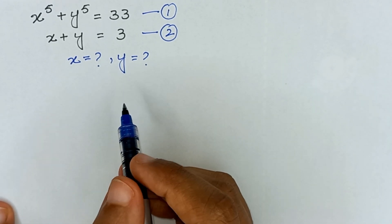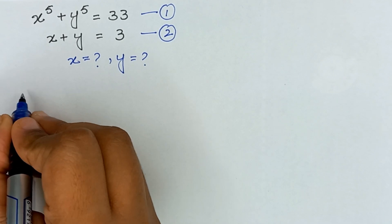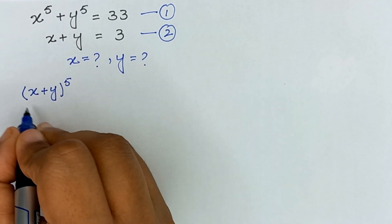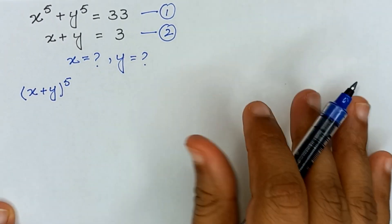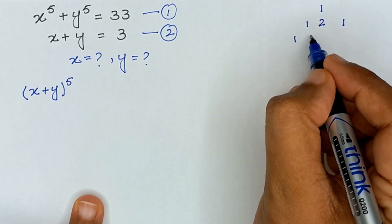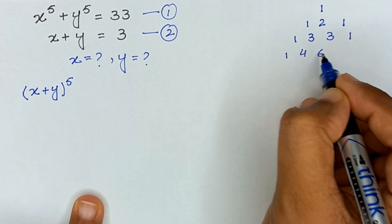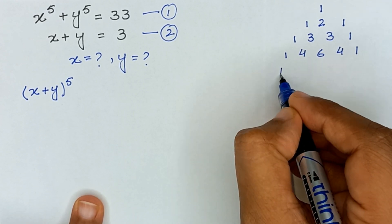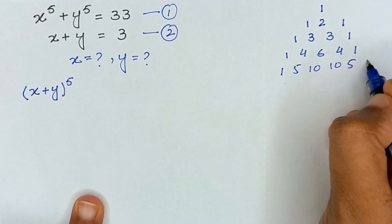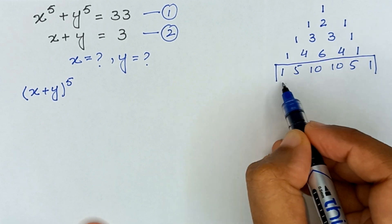Let's start. Here we have x raised to the power 5 plus y raised to the power 5. In the first step, we will expand (x + y)⁵ using the Pascal's triangle formula. The Pascal's triangle rows are: 1; 1,1; 1,2,1; 1,3,3,1; 1,4,6,4,1; and 1,5,10,10,5,1. Since we have power 5, we use these coefficients.